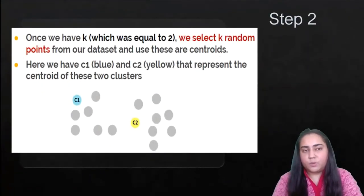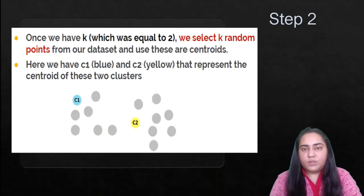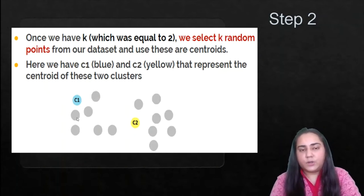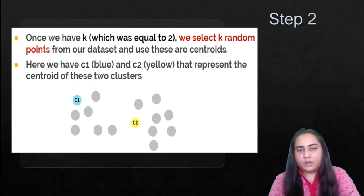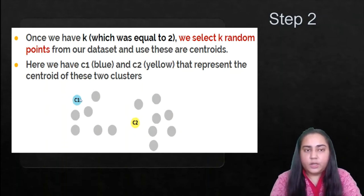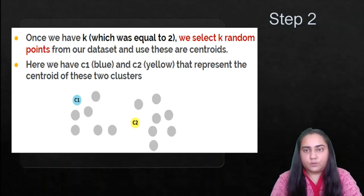Step two: once you have k — which we've taken as two for this example — you select k random points from your dataset and use these as centroids. Because we have two clusters, k equals two, so we select two points as our centroids. These are random provisional centroids. Here we have C1 which is blue and C2 which is yellow, both picked at random as the centroids of two different clusters.